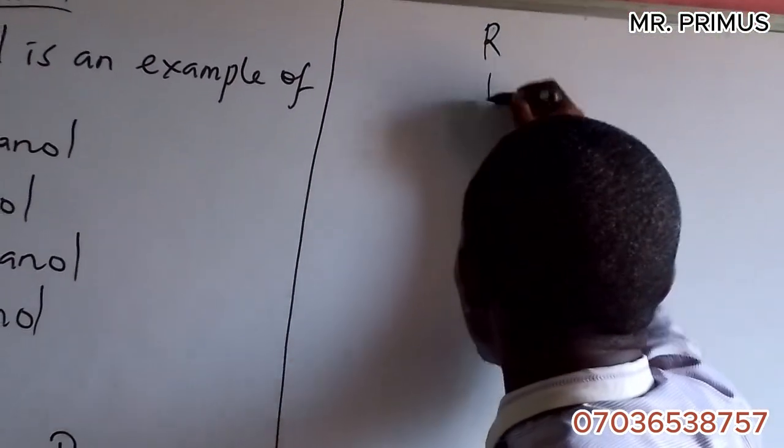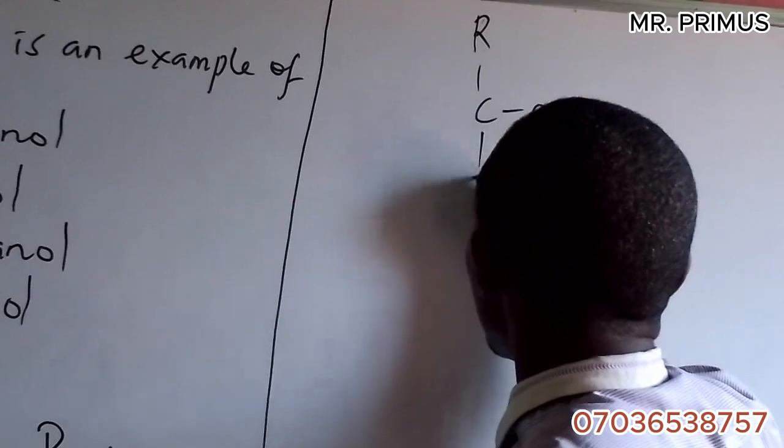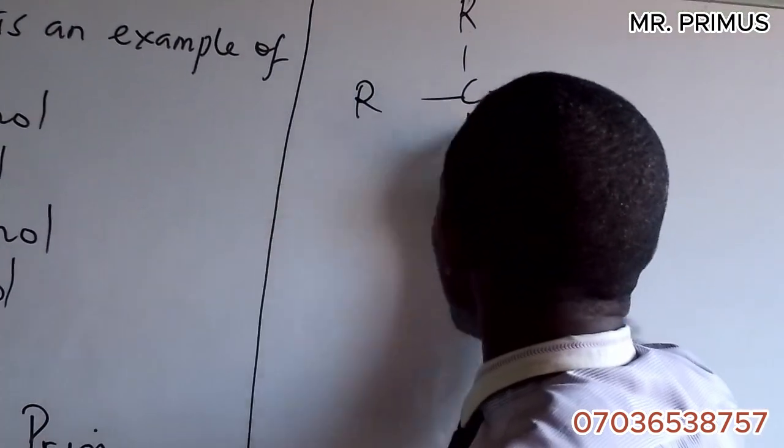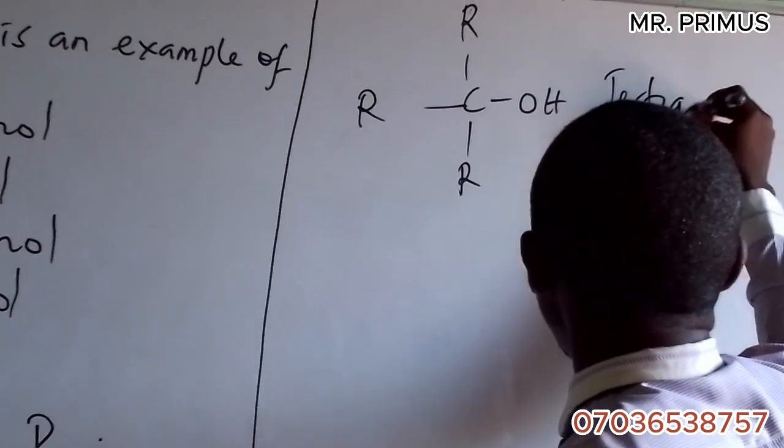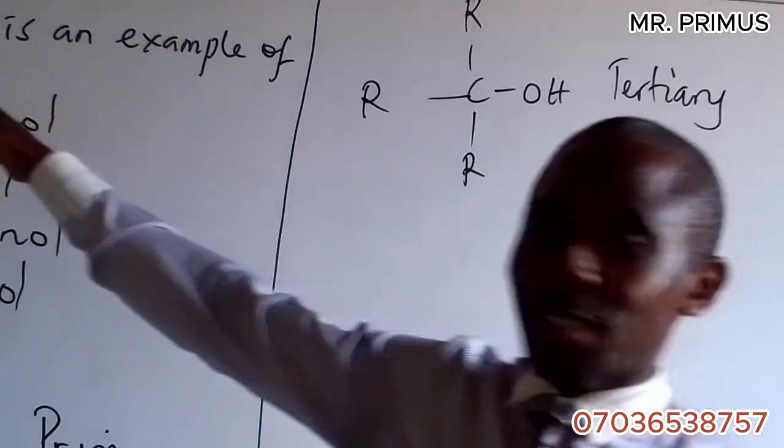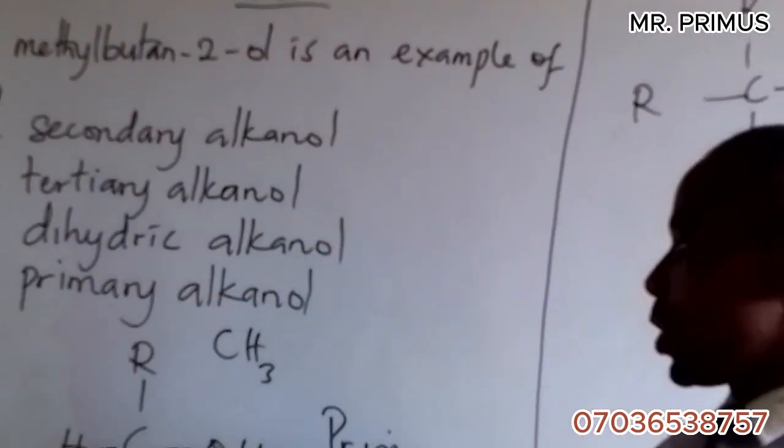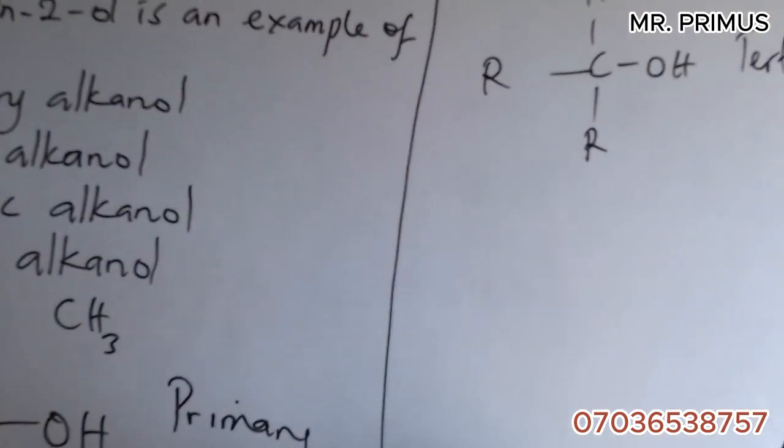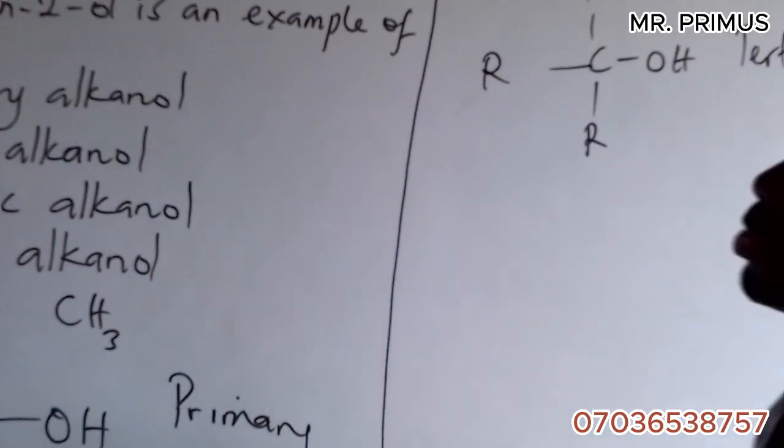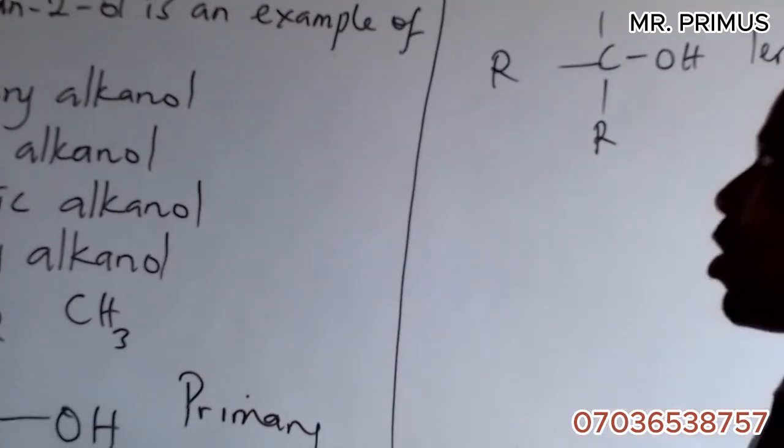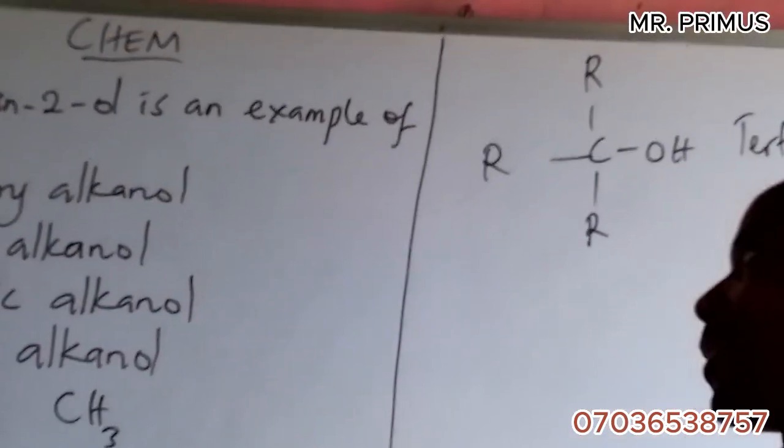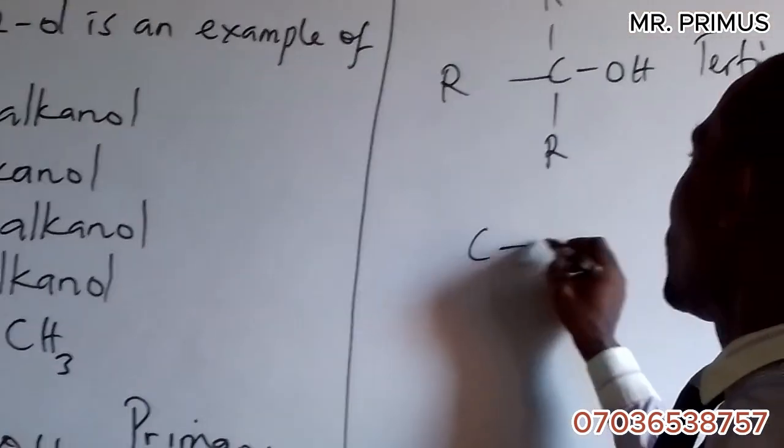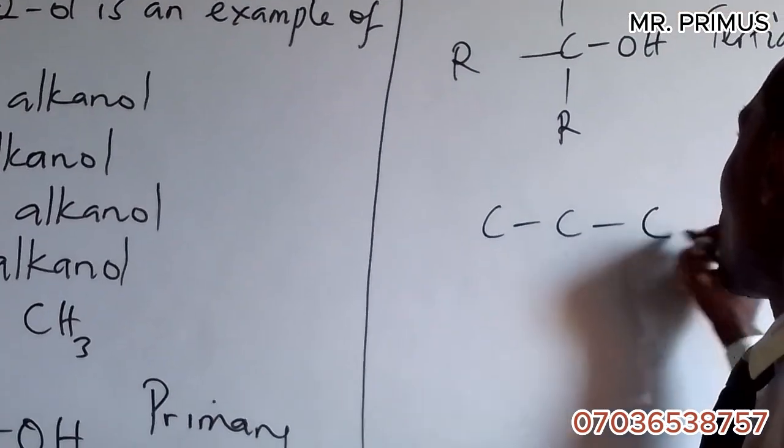And if you have C-OH with R, R, R attached, this one is tertiary. So we are going to draw this structure to see which one it matches. Let's do it together. Butan means one, two, three, four carbons.